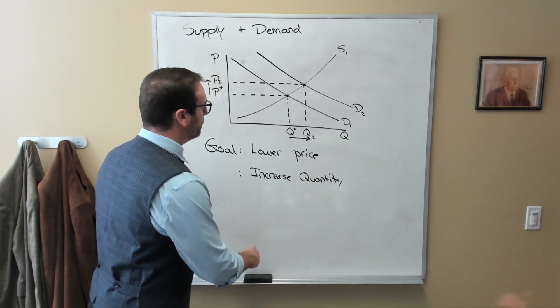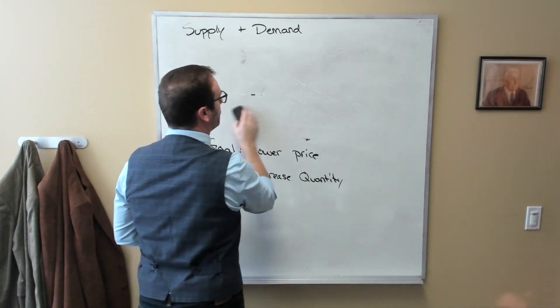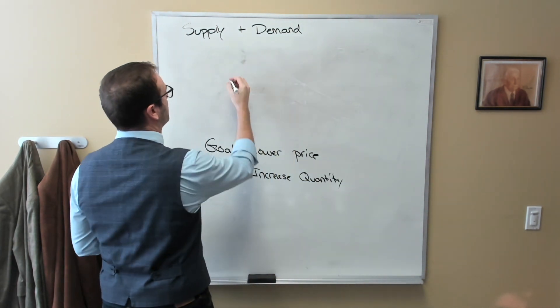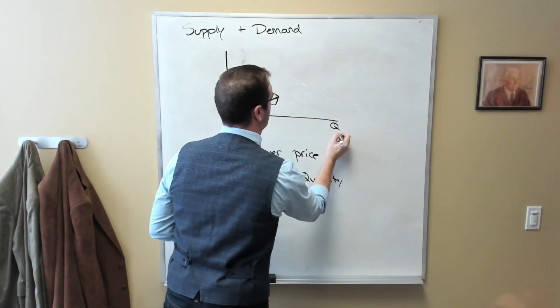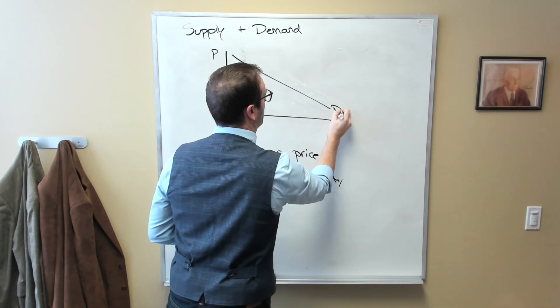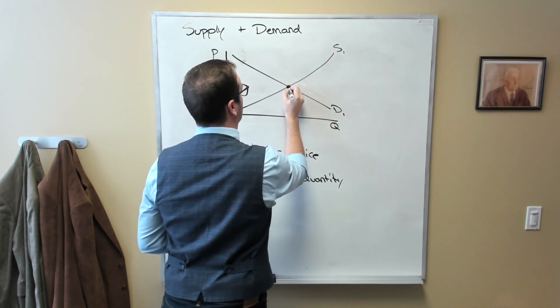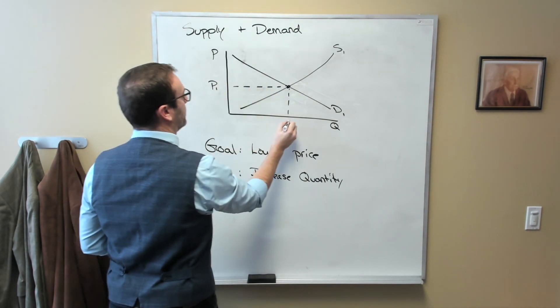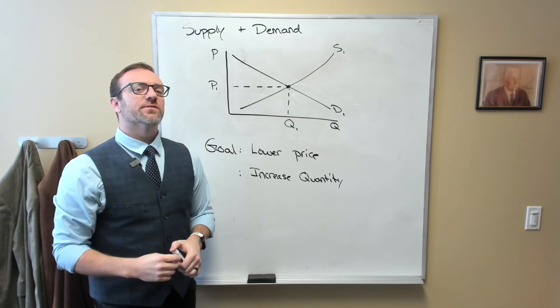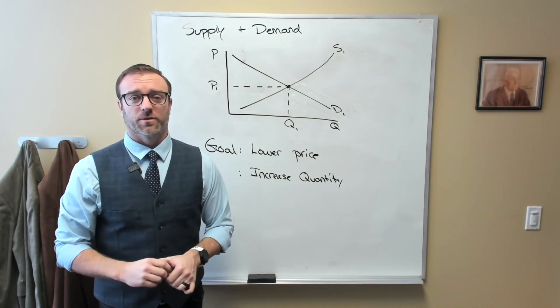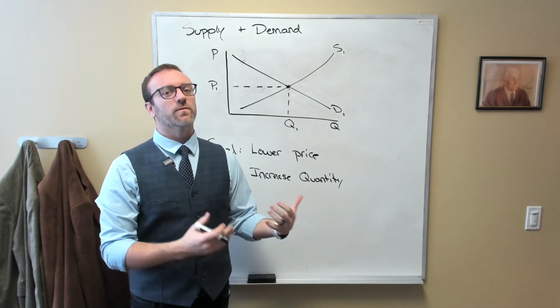So what if instead of increasing demand, what if we tried to find ways to make it easier to provide health care? Okay, so here we have our standard model, standard starting point, supply and demand with our price and quantity. What if instead of focusing on the aspect of buying health care, what if we focused on the side of producing or providing health care?